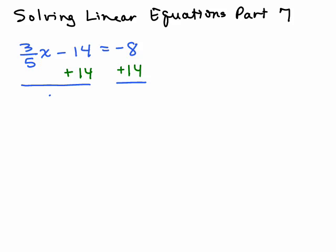So we have 3 fifths x equals negative 8. I'm sorry, equals 6 because I have to remember negative 8 plus 14. Now we have 3 fifths times x so we could divide by 3 fifths, but it's easier to multiply by the reciprocal. The whole idea is if you multiply by the reciprocal here then it will cancel.